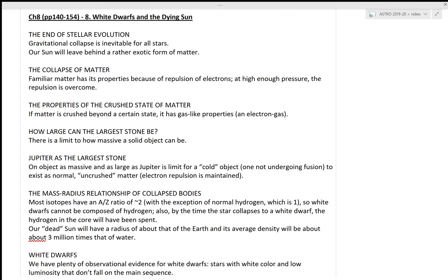really getting to the death part of our sun. For all stars, gravity is going to win. Gravitational collapse is inevitable for all stars. Our sun, actually most stars, will leave behind a rather exotic form of matter. So our sun is going to really leave behind its core. Its outer layers will be expelled into space. And that's what I mentioned in the previous video when discussing planetary nebula.